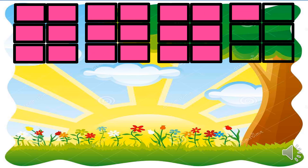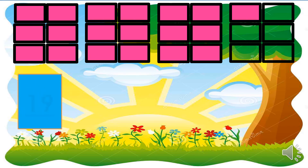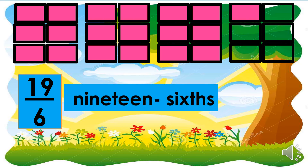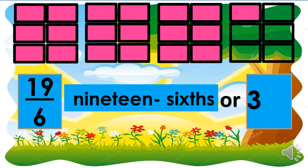There are 19 shaded parts and should be written as the numerator, so 19 is the numerator. And each is divided into six, so six is the denominator. The symbol for this is 19-sixths, written as 19 over six. Or, how many are the whole rectangles? There are three whole rectangles and one-sixth. So three and one-sixth is equivalent to 19-sixths.